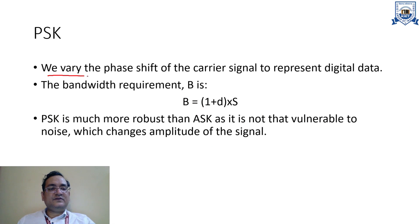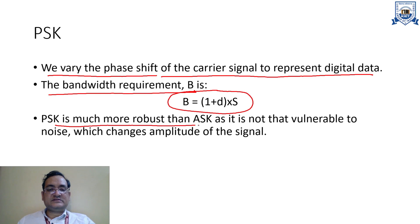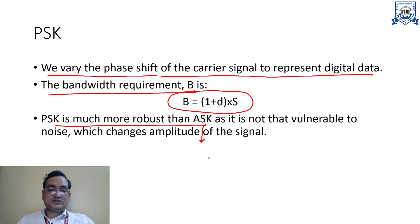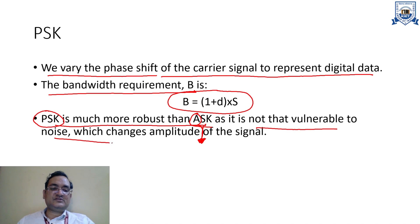In phase shift keying, we vary the phase shift of the carrier signal to represent the digital data. The bandwidth required is the same as that of the BASK signal. PSK is much more robust than ASK because I am just changing the phase, and phase is not a parameter that can easily be affected by Gaussian noise. That's why PSK is more robust in comparison to ASK. In ASK, you change the amplitude of the carrier, and noise affects the signal amplitude more than frequency or phase. So PSK is more robust and not vulnerable to noise that changes the amplitude of the signal.